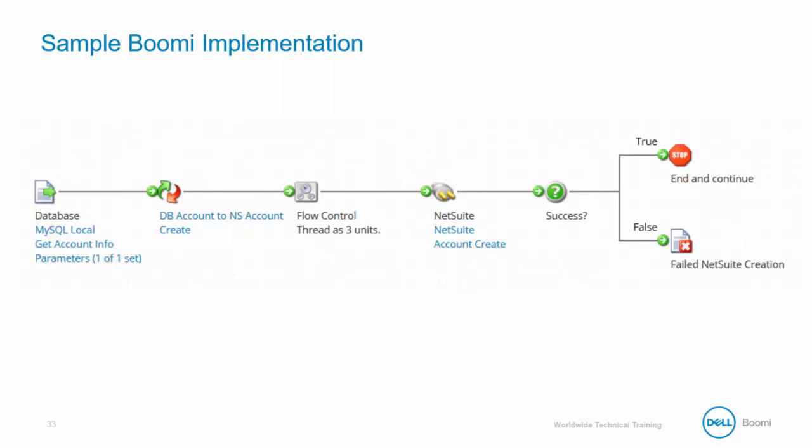Here's a sample Boomi implementation. A database is queried for all account records. Those records flow into the map and into the flow control shape. The shape is configured for threaded execution with three units and no document batching. The number of records returned from the database query are split into three batches, and the rest of the process shapes are processed in different threads on the runtime in parallel to completion.